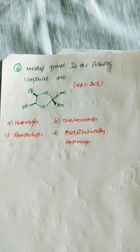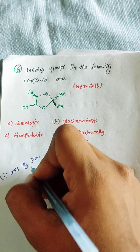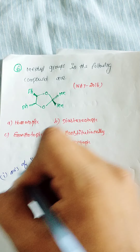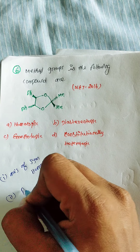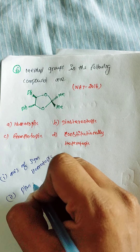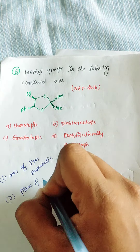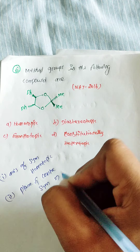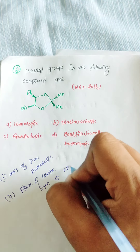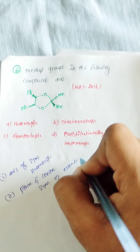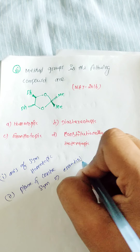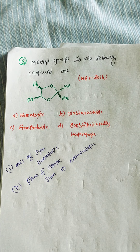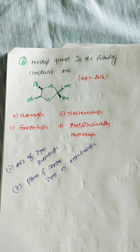If an axis of symmetry or center of symmetry is present, it relates to homotopic. If a plane of symmetry is present, it is enantiotopic. Using my shortcut easy calculation method, we can determine the relationship.